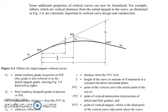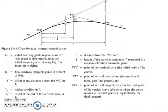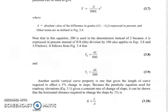To summarize: y_m is the mid-curve offset located at PVI, and y_f is the final offset at the end of the curve at PVT. To compute the offsets, y equals A times x² divided by (200 times L), where A is the absolute value of the difference in grades, |G₁ − G₂|.